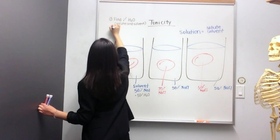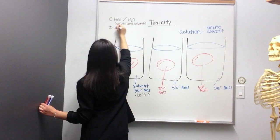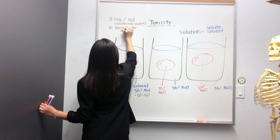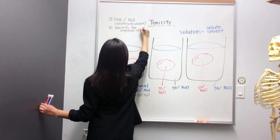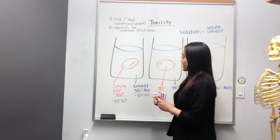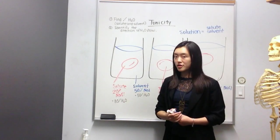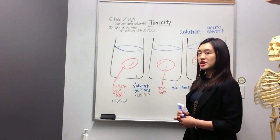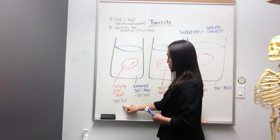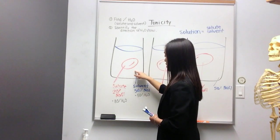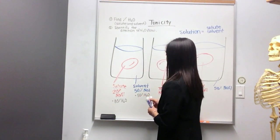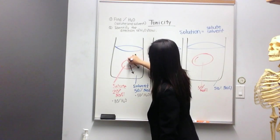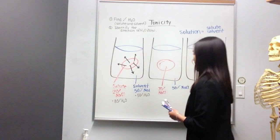Step number two is to identify the direction of H2O flow. It's important that we recognize the direction of water flow. So we know that water always flows from high to low concentration. Looking here, there is a high concentration of water within the cell, and a low concentration of water outside the cell. This means again that water flows from high to low, meaning that water will leave the red blood cell and flow into the solution.